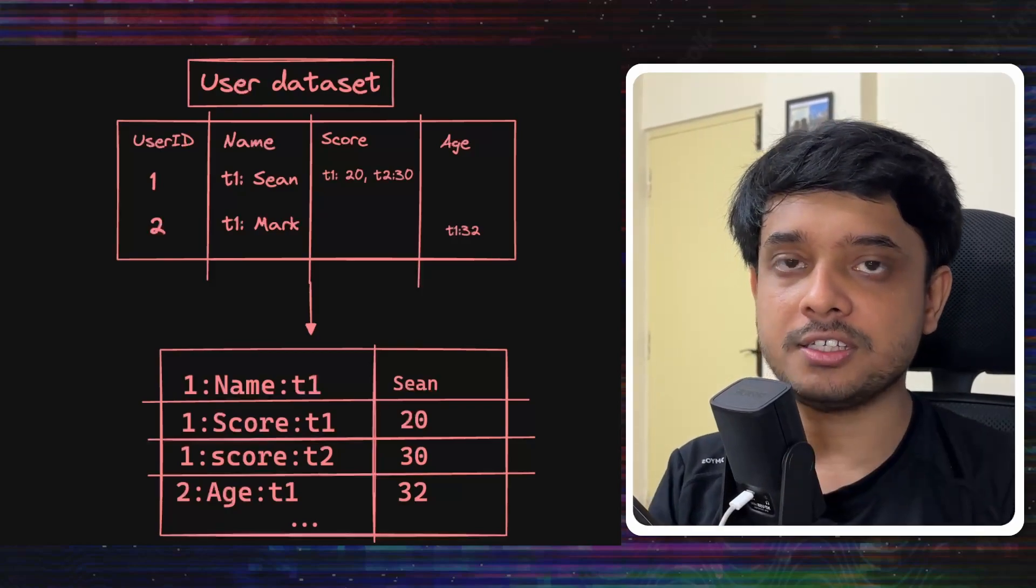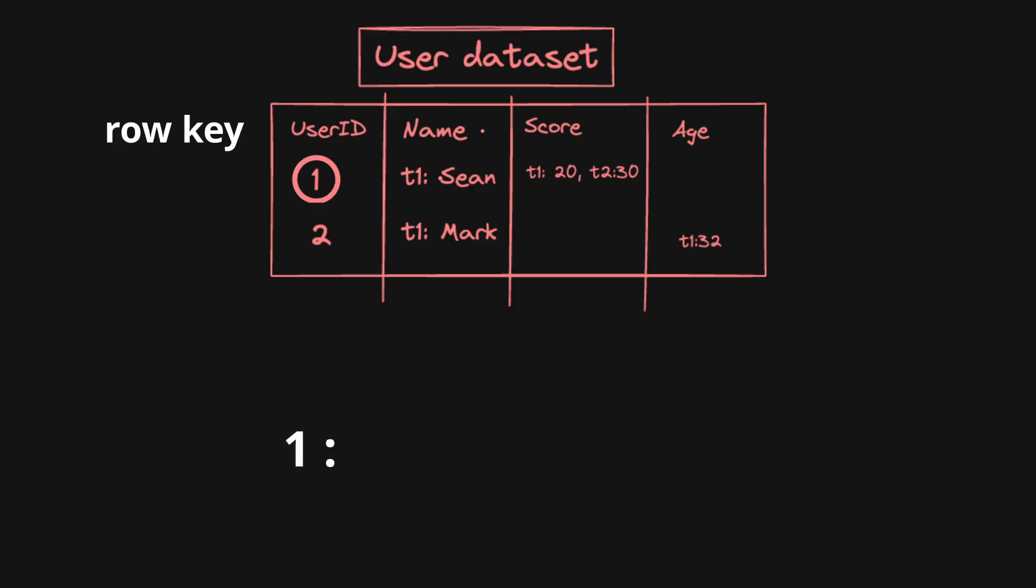We will use something like this. We will take the row key and then concatenate it with the column name of the value and then concatenate it with the timestamp of the value. So now it will uniquely identify the value: row key plus the column name plus the timestamp.